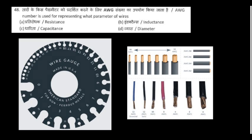AWG number — AWG is used for representing what parameter of the wire? AWG stands for American Wire Gauge. In India we use Standard Wire Gauge. By seeing the diagram, AWG is used to measure the diameter of the wire — that is the right answer.